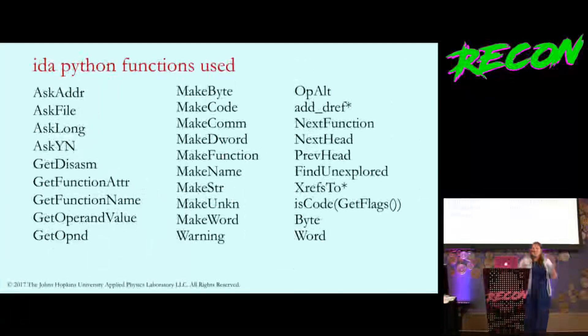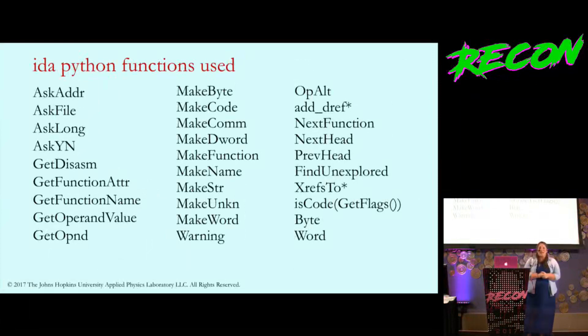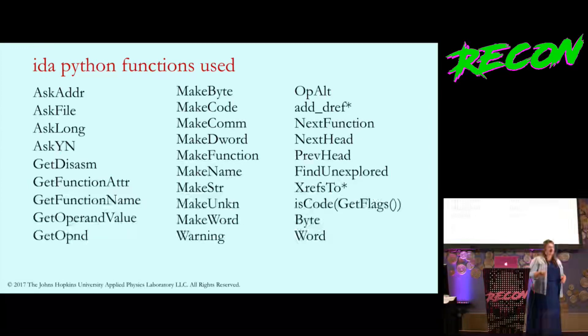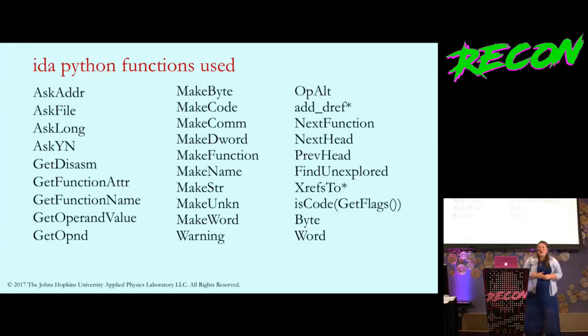But more than anything, what I hope you can take away is that this is every IDA Python API function that was used to create all of these scripts. It's really not that scary when you look at the documentation. My tips for you are if you're looking at the documentation and go to IDC, you really can just focus on the gets and the makes for a lot of things. The asks are generally used for user input.